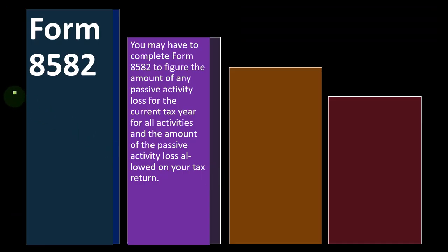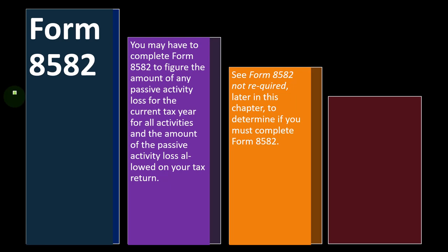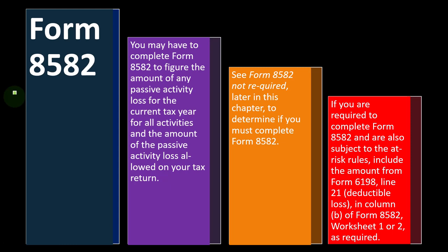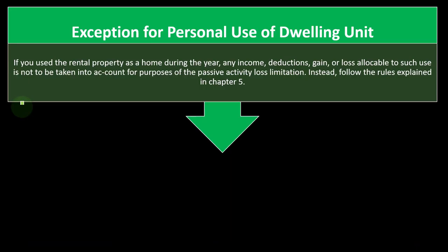You may have to complete Form 8582 to figure the amount of any passive activity loss for the current tax year for all activities and the amount of passive activity loss allowed on your tax return. If you are required to complete Form 8582 and are also subject to the at-risk rules, include the amount from Form 6198 Line 21, Deductible Loss, in Column B of Form 8582 Worksheet 1 or 2, as required.